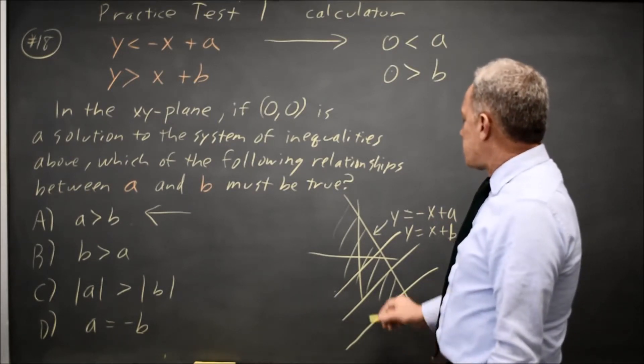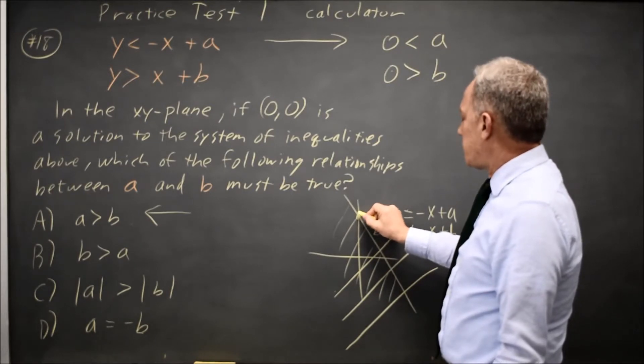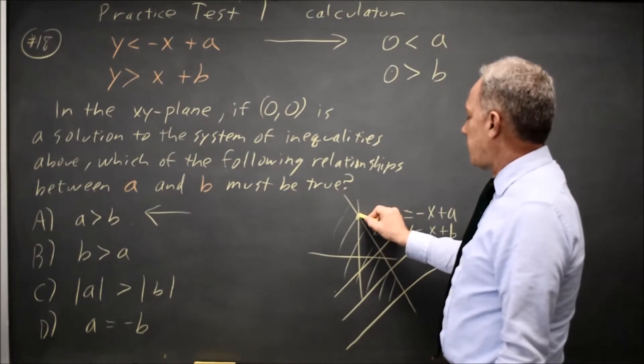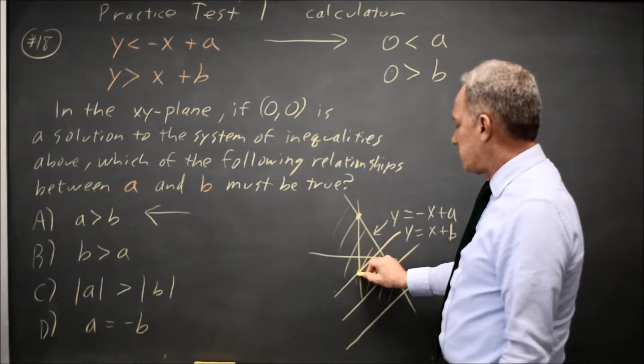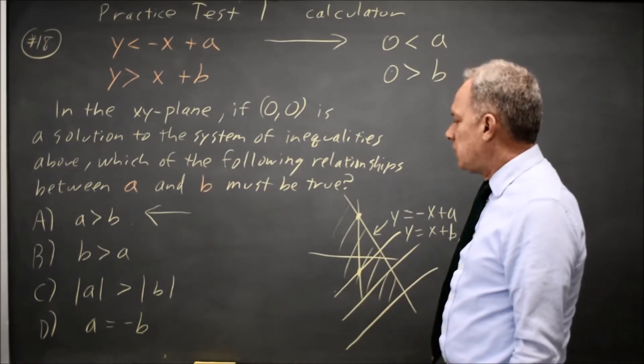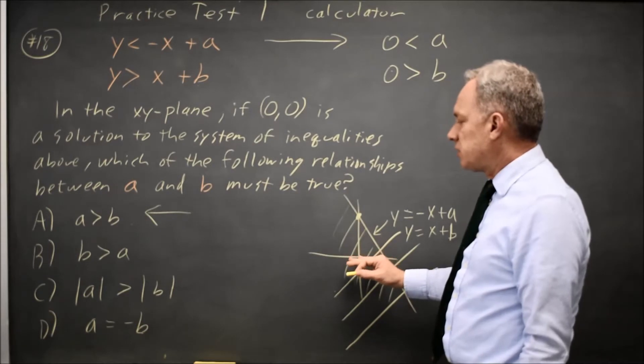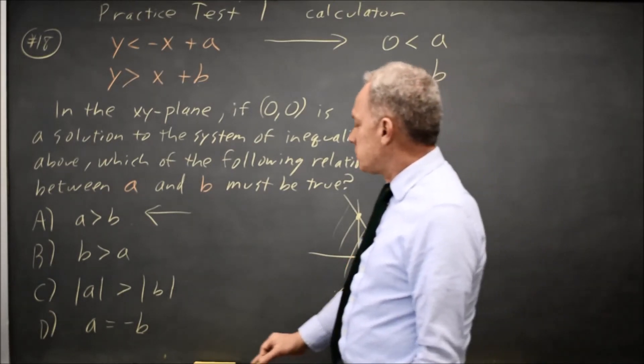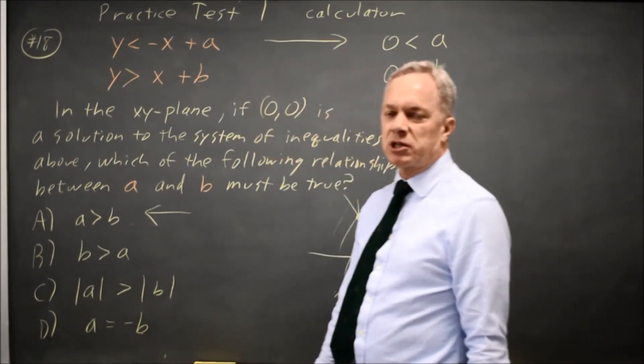And that tells us since the y-intercept A is above the origin, and the y-intercept B is below the origin, A must be greater than B. I could draw it so that they have A equals negative B, but that is not required in my drawing.